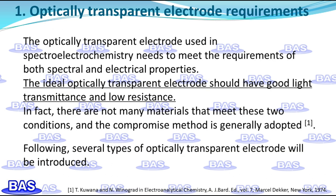The optically transparent electrode used in spectro-electrochemistry needs to meet the requirements of both spectral and electrical properties. The ideal optically transparent electrode should have good light transmittance and low resistance. In fact, there are not many materials that meet these two conditions, and the compromise method is generally adopted. Several types of optically transparent electrode will be introduced.